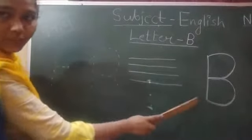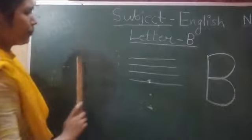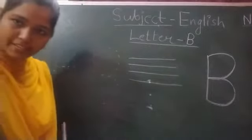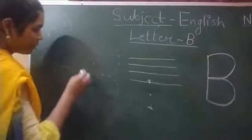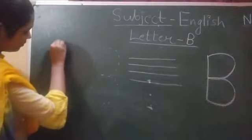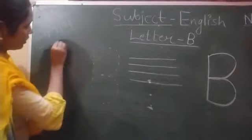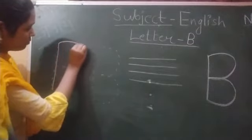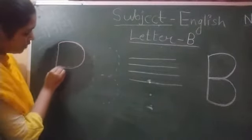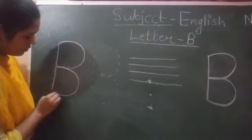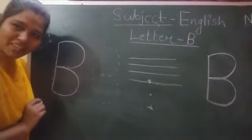This is our letter B. First we trace letter B. Start tracing. Make a standing line. Second, make a curve. And third, make a curve. And here we trace letter B.